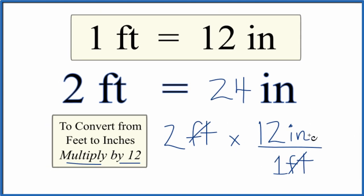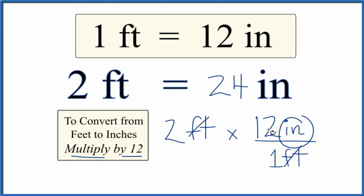we have feet on the top and bottom. They cancel out. We're left with inches. So two times 12 inches is 24 inches. That's what we found before.